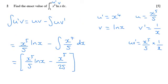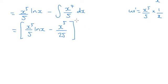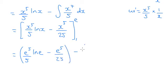Now we can apply our limits, which were e and 1. So we are going to get e to the 5 over 5 times by ln(e), I'll simplify all this in a second, take away e to the 5 over 25, minus 1 to the 5 over 5, so that's just a fifth ln(1), minus 1 to the 5, so just 1 over 25.